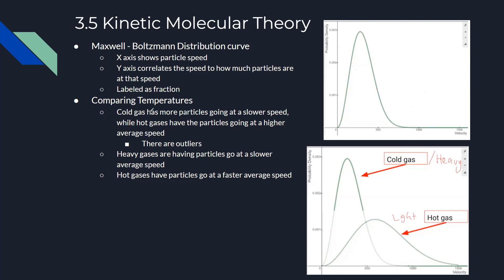Comparing temperatures on the Maxwell-Boltzmann curve: cold gases have more particles at slower speeds, while hot gases have particles at a higher average speed. Heavy gases have particles at slower average speeds; light or hot gases have particles at faster average speeds. The distribution curve shifts and flattens for hot or light gases and peaks sharply for cold or heavy gases.